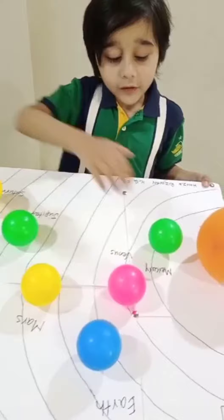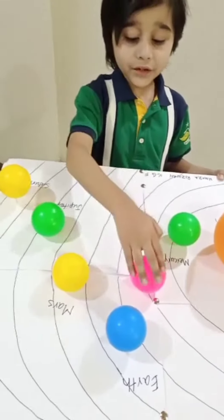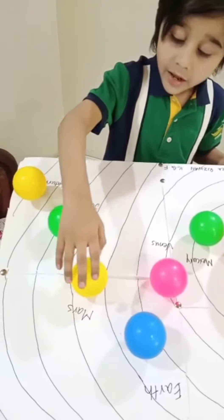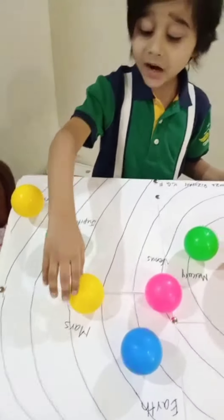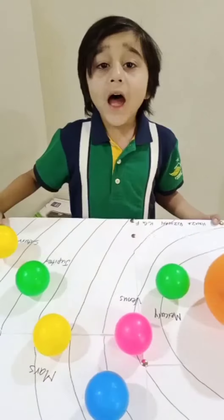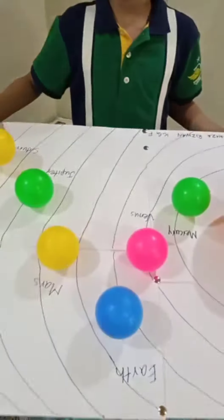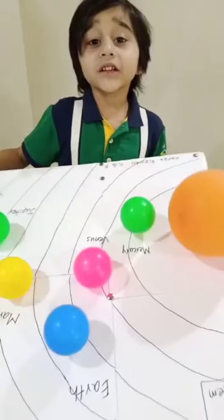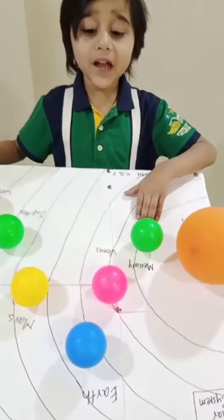We have Mercury, Venus, Earth, Mars, Jupiter and Saturn and Uranus and Neptune. Mercury is the smallest planet.